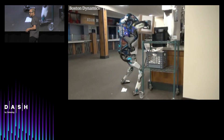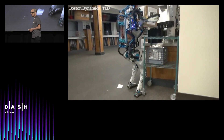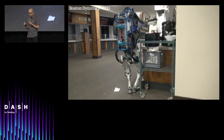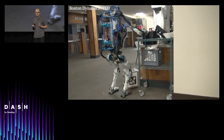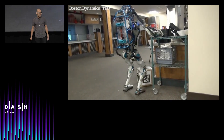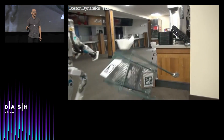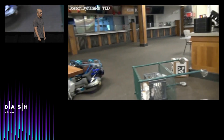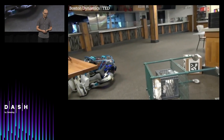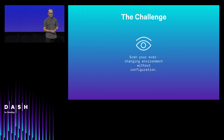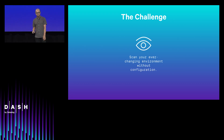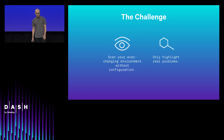There are many AI systems for operations out there, but they all require that you tell them where to look. They all require intensive setup, and finally they require that you turn them off because you get inundated with false alarms. So our challenge was to build a system that would scan your ever-changing environment without any configuration — we'll be looking out for the dragons for you — and only highlight real problems.